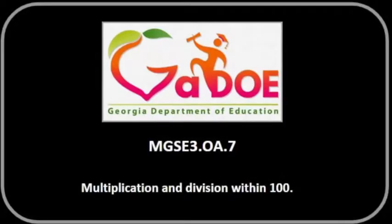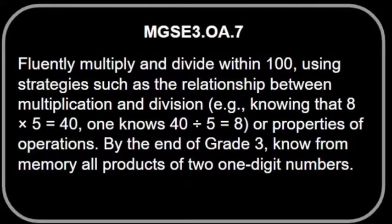This presentation will review the Georgia Standards of Excellence 3087, which focuses on multiplication and division within 100. 3087 states that students will fluently multiply and divide within 100 using strategies such as the relationship between multiplication and division, as well as the properties of operations. By the end of grade 3, know from memory all products of two one-digit numbers.